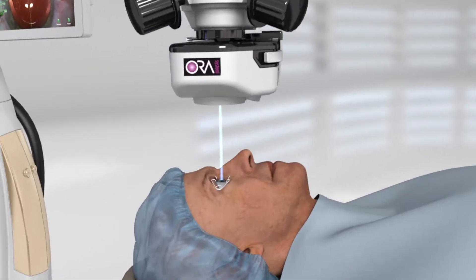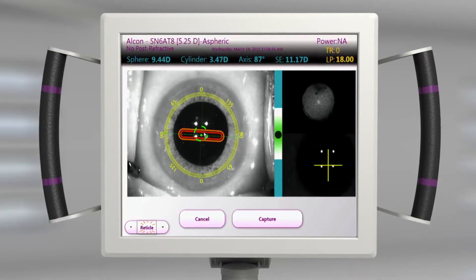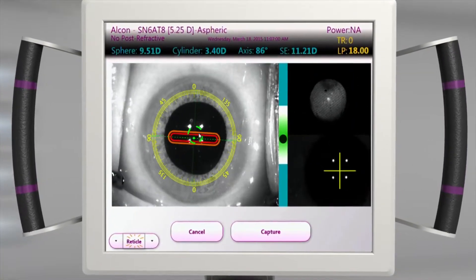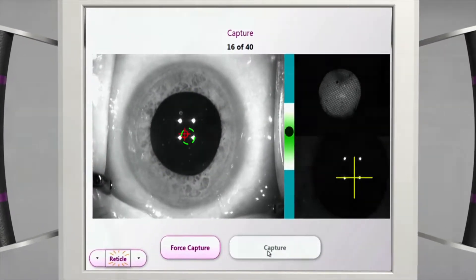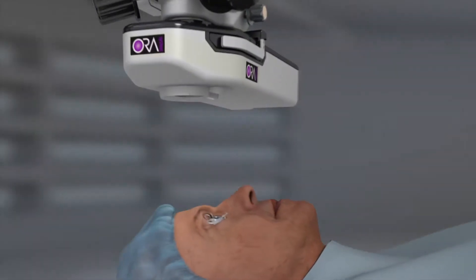During a cataract procedure, the Aura system with Verify Plus technology provides real-time data verification in the OR that allows the surgeon to validate and refine his or her surgical plan as needed. This provides continuous assessment of the patient's eye, allowing for highly accurate refractive measurements.